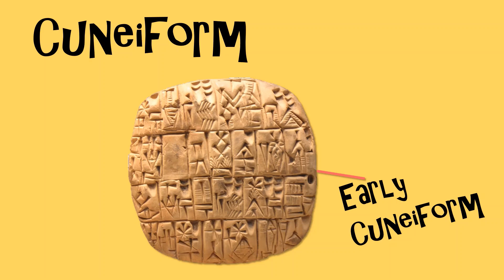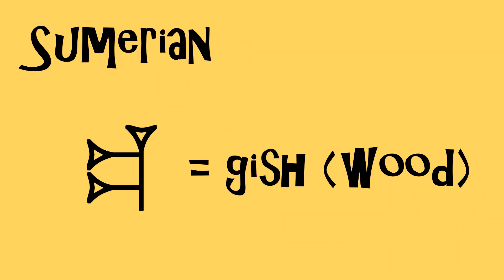Just like there's different kinds of writing you can do using a pen on paper, there's different kinds of ways cuneiform can work. In Sumerian, every sign stood for a whole word. So, for example, this sign meant wood and was pronounced gish.